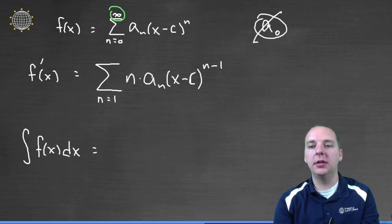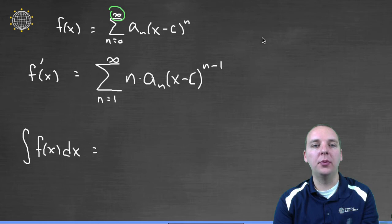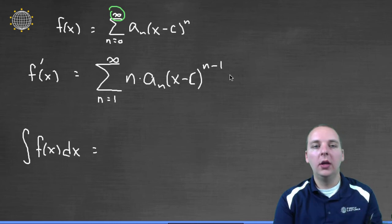Pretty much the rest of it is just the power rule. Bring the n down, a sub n, x minus c to the n minus one.